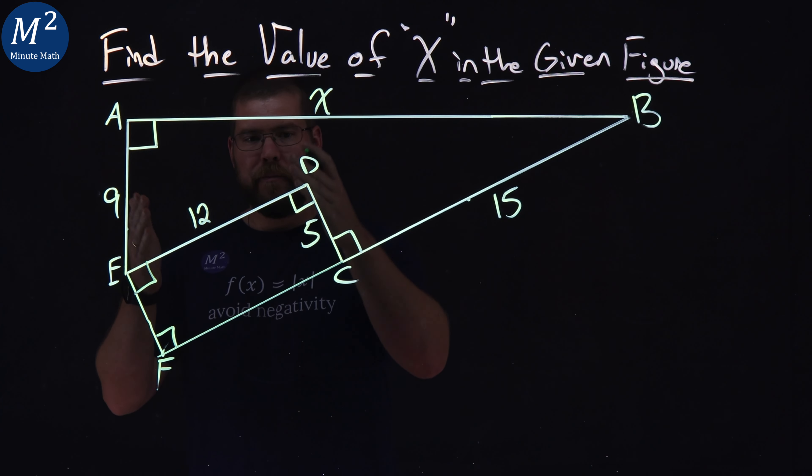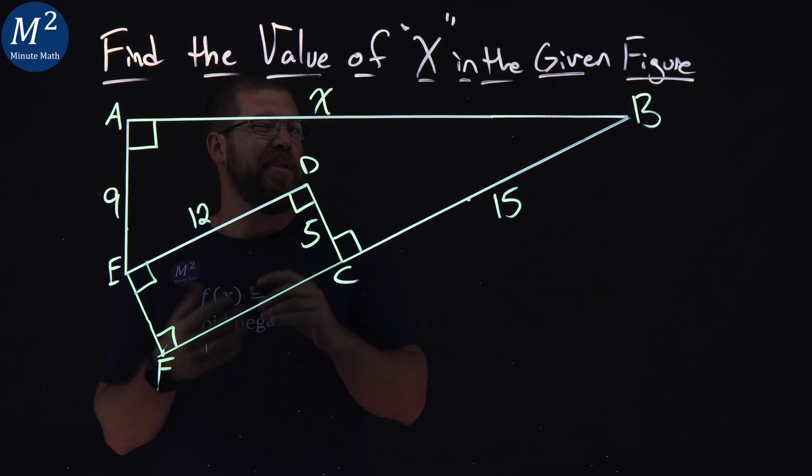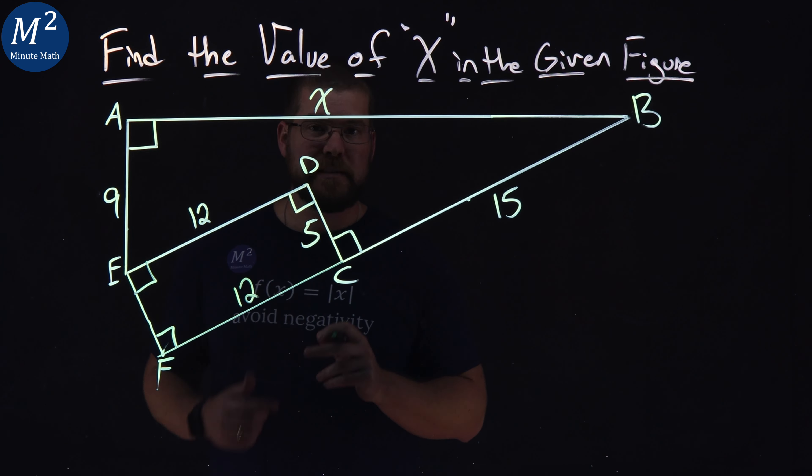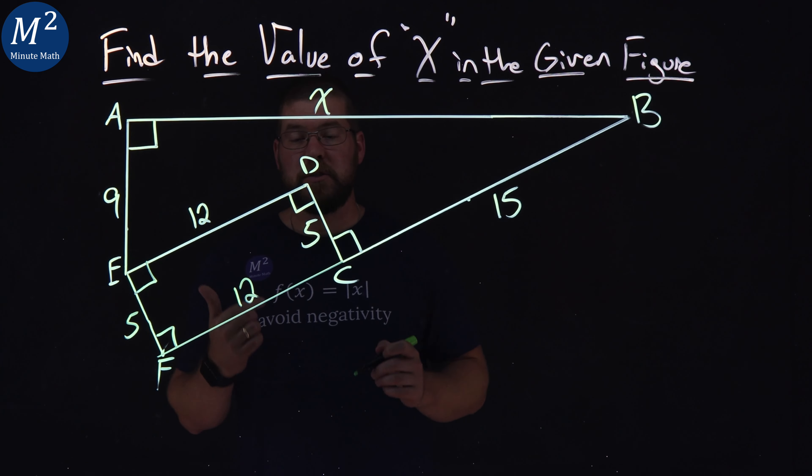I'm drawing it so that we have a right angle here, and here we have rectangles. Let's call this value F. What do we know about our new rectangle? FC, since it's a rectangle, has the length of ED, they're the same length, so we have 12 right here. DC is the same length as EF, we have 5. That's good to know.